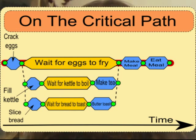Notice how changing one element on the critical path can sometimes cause a dramatic restructuring of the project, and can impact on what needs to be done next. This breakfast example is a simple one, but it illustrates the basic principles.